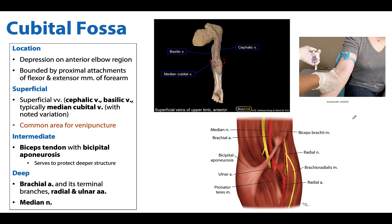That is the cubital fossa — a really packed and interesting, but relatively small space anterior to the elbow joint. Please take time to review the summary slide with the big picture concepts and, as always, reach out with any questions. Have an excellent rest of your day.